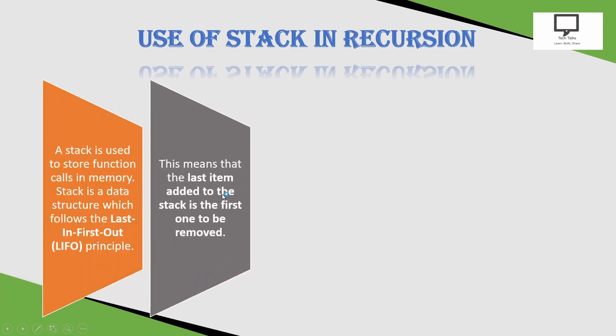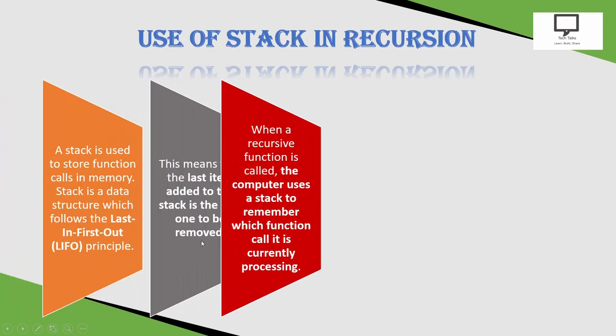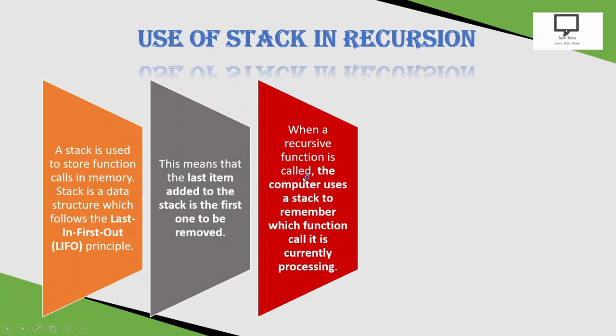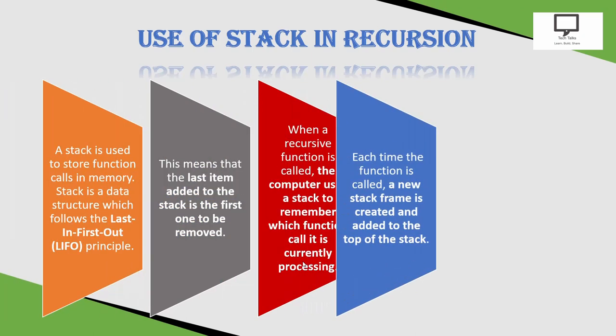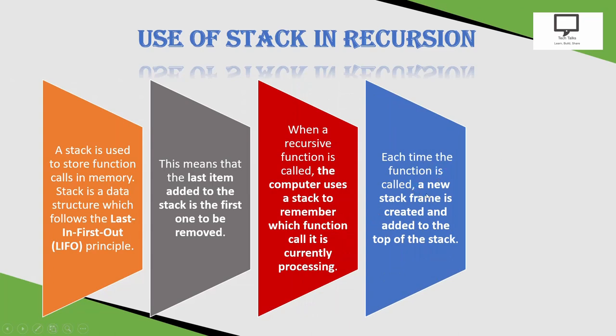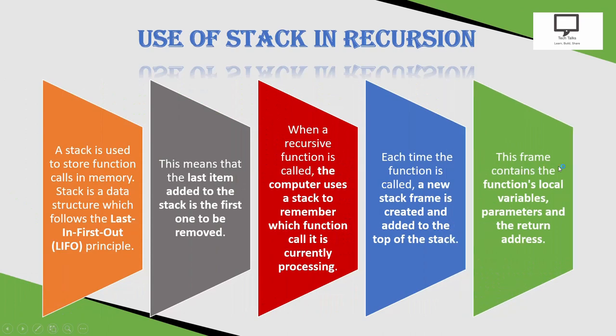When a recursive function call is done, the computer uses a stack to remember which function call it is currently processing. To keep track of the current function call, the stack is used. Every time a function is called, a new stack frame is created and gets pushed on top of the stack. This frame contains the function's local variables, parameters, and the return address where it has to return back.